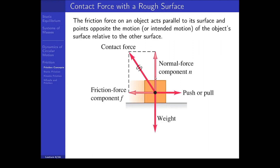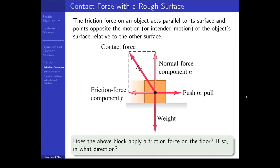Here we have the weight, the normal force, the pulling force, and the opposing friction force on this block. Does the block apply a friction force on the floor? If so, in what direction? It does — that's Newton's third law. For every force, there is an equal and opposite force acting on the other body, and it's to the right. The floor appears to be moving to the left relative to the block, so the block will exert a friction force to the right on the floor.